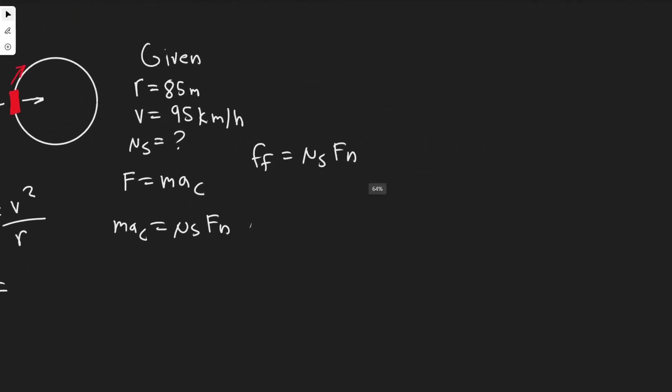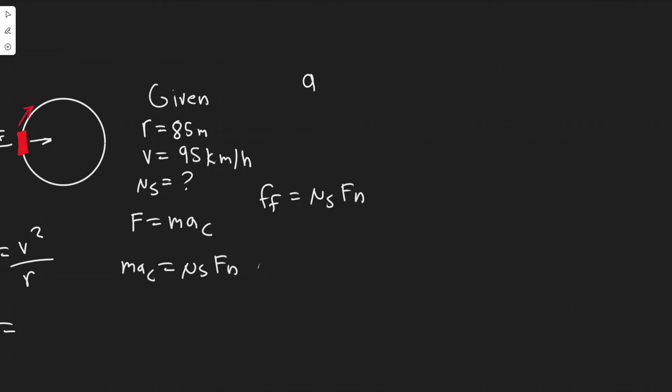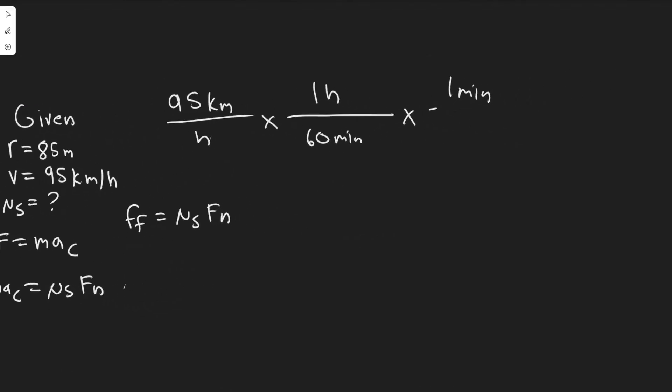Converting this, let me do it up here. It's 95 kilometers per hour, so one hour is 60 minutes, one minute is 60 seconds, so now we've got the correct time unit. Then we know that one kilometer is a thousand meters.